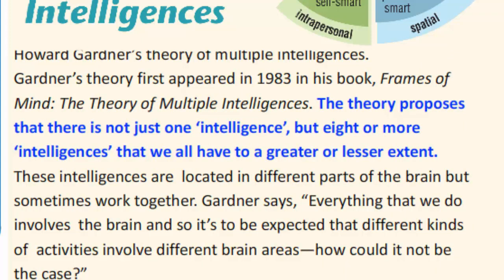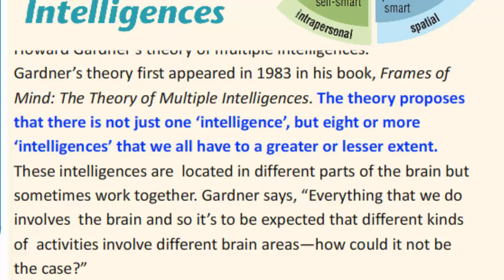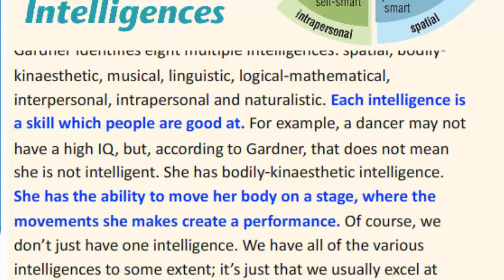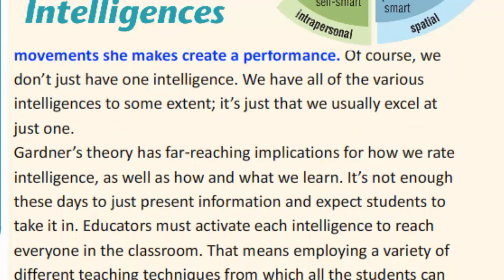The theory proposes that there is not just one intelligence, but eight or more intelligences that we all have to a greater or lesser extent. It's a defining relative clause. Each intelligence is a skill which people are good at — it's a defining clause. She has the ability to move her body on a stage, where the movements she makes create a performance. It's a non-defining relative clause.